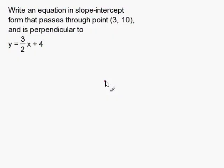Write an equation in slope-intercept form that passes through point (3,10) and is perpendicular to y equals 3 over 2x plus 4.